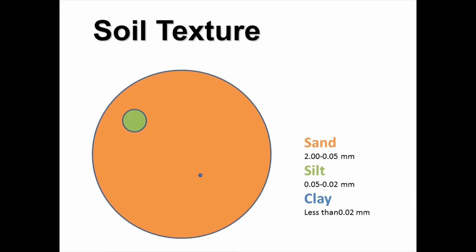Let's start with physical properties — soil texture. When somebody uses the term soil texture, they're just talking about the relative amounts of sand, silt, and clay in a soil. Here we see a representation of the relative sizes of sand to silt to clay. Chemically, these particles are often very similar in composition; the main difference is particle size. Sand is several times larger than silt, which in turn is several times larger than the tiny clay particle.